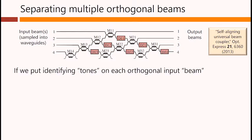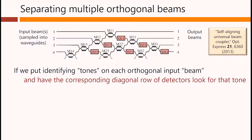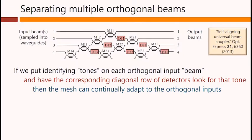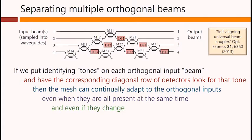If we now put identifying tones on each orthogonal input beam, that is, a small modulation at some frequency, for example, and we have the corresponding diagonal row of detectors look just for that tone, then the mesh can continually adapt to the orthogonal inputs, even when they are all present at the same time, and even if they change.